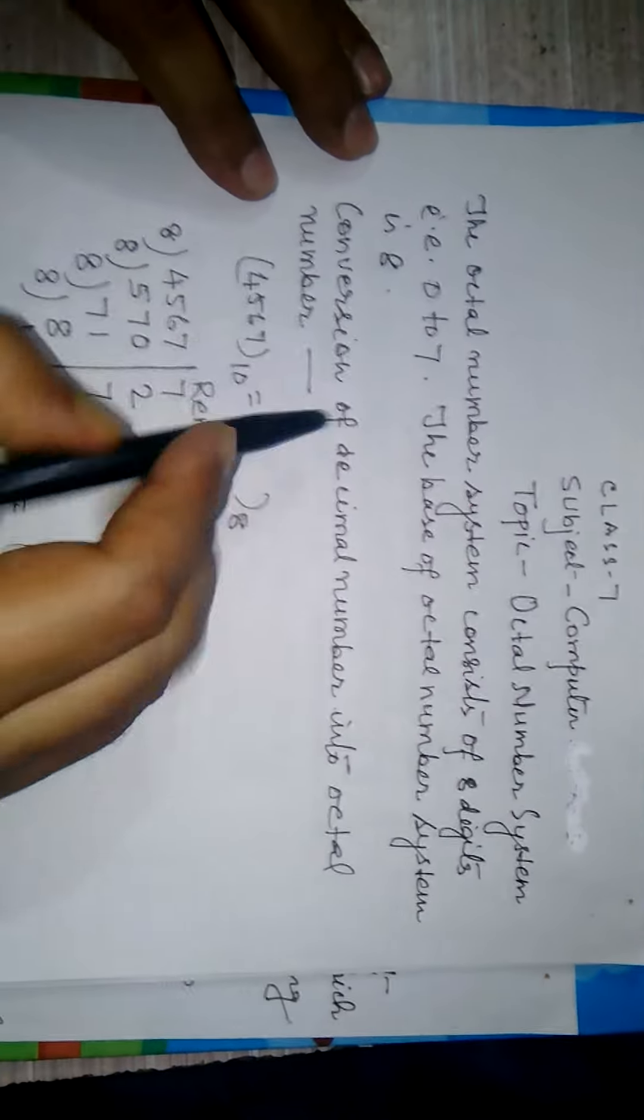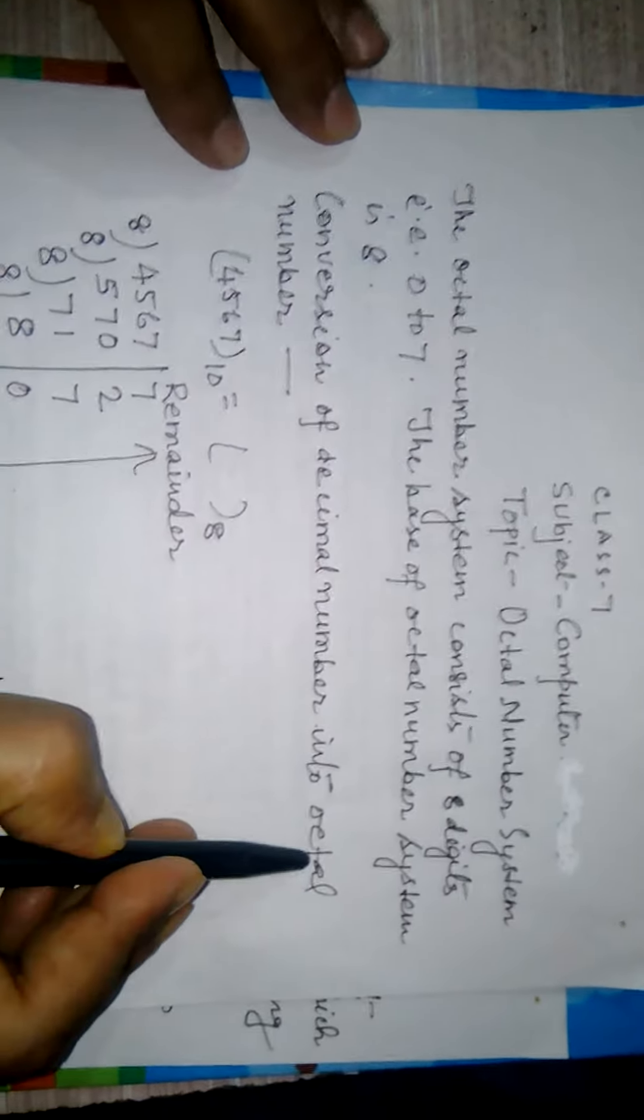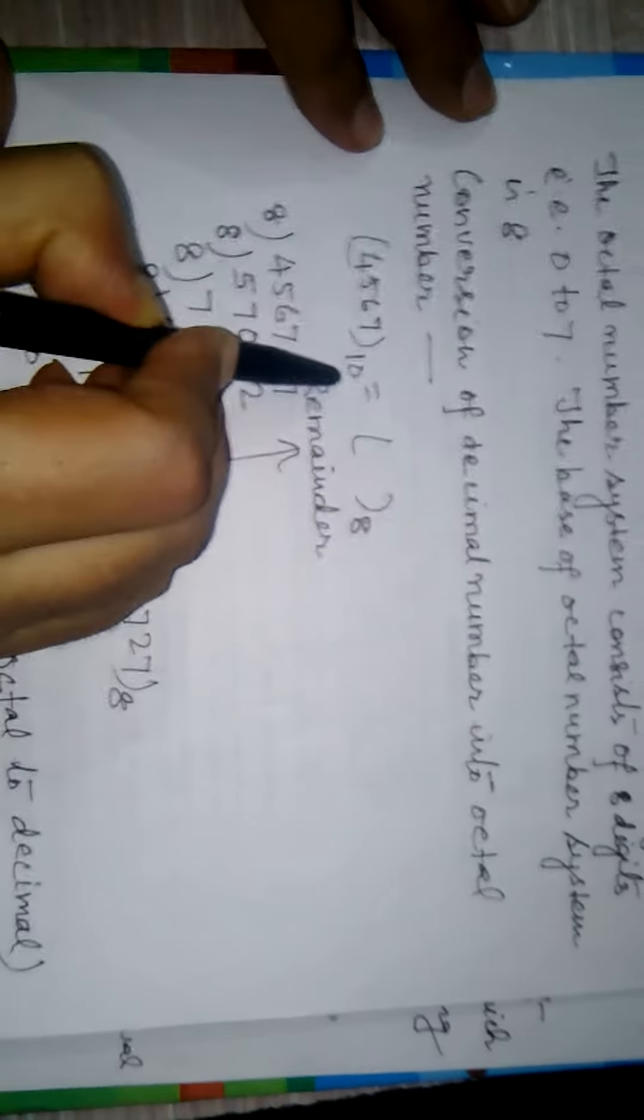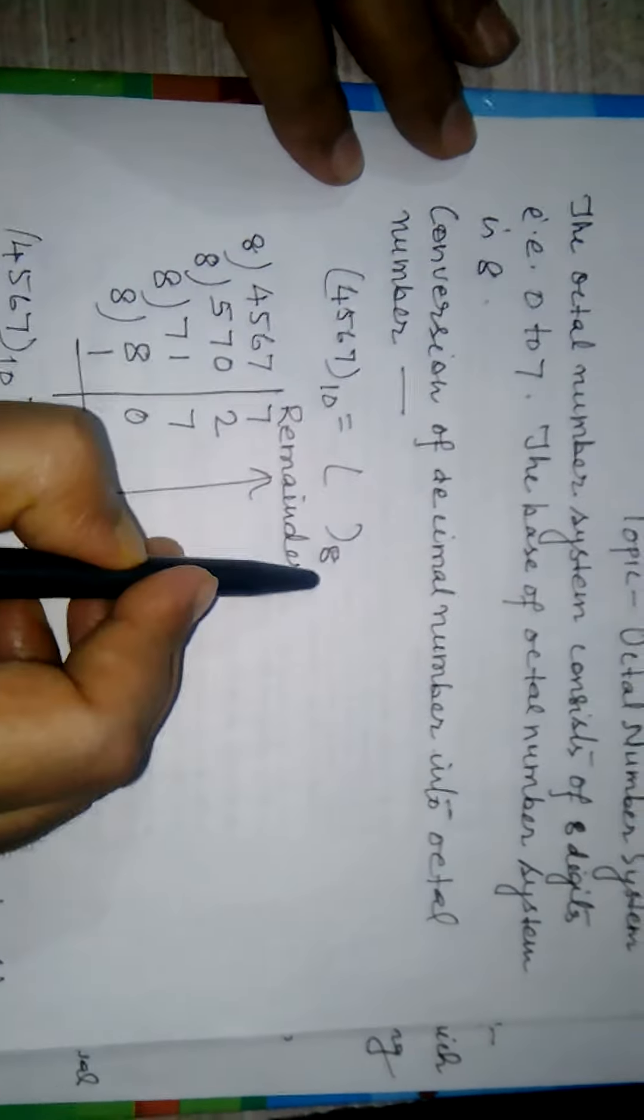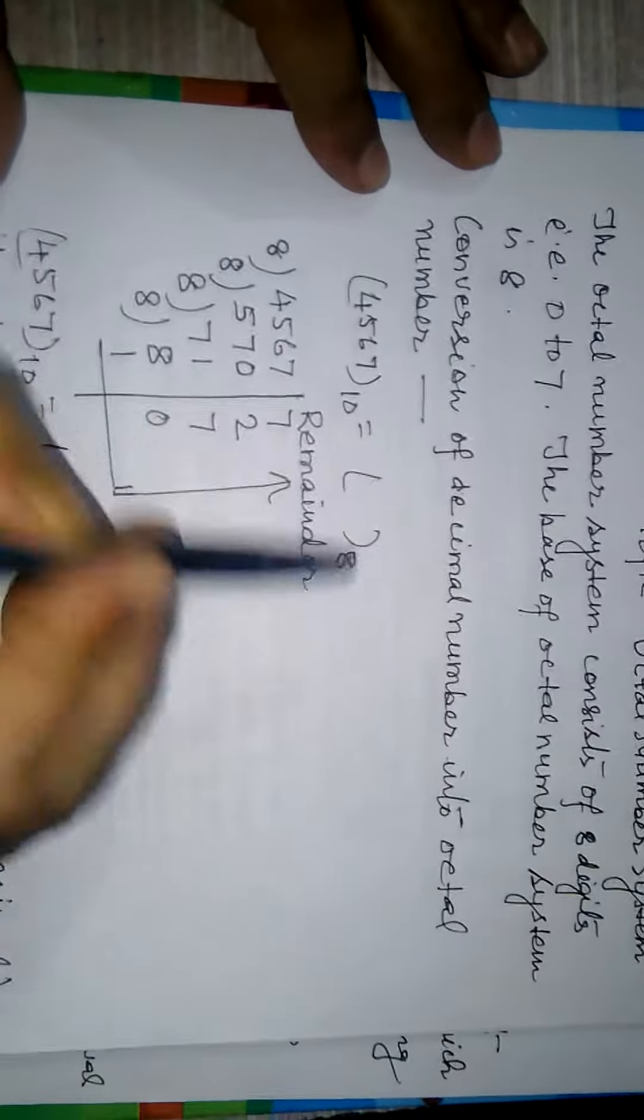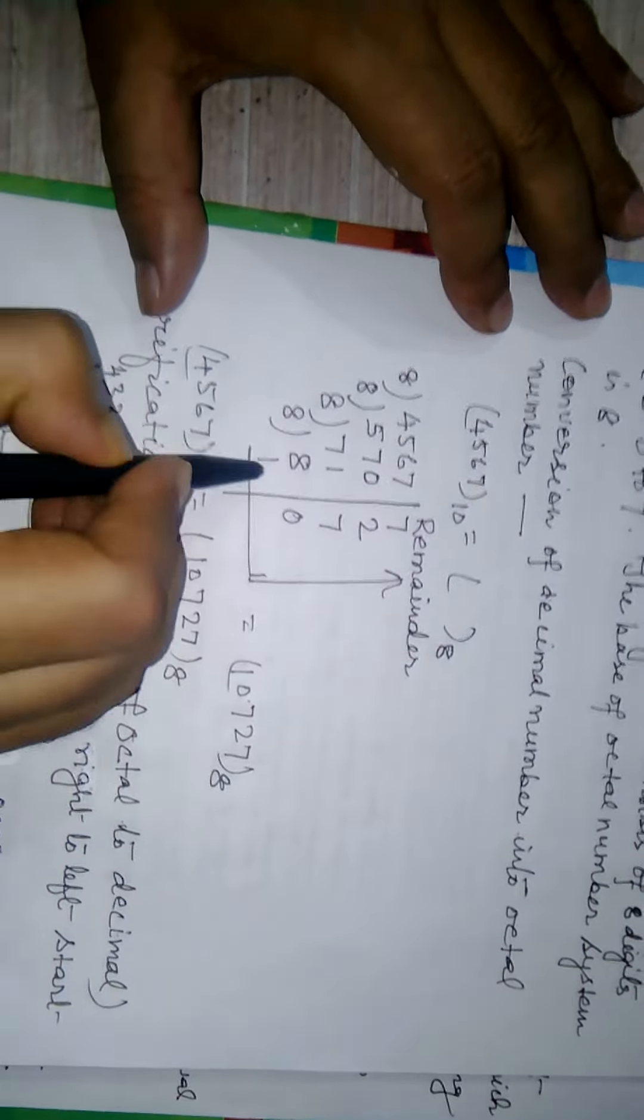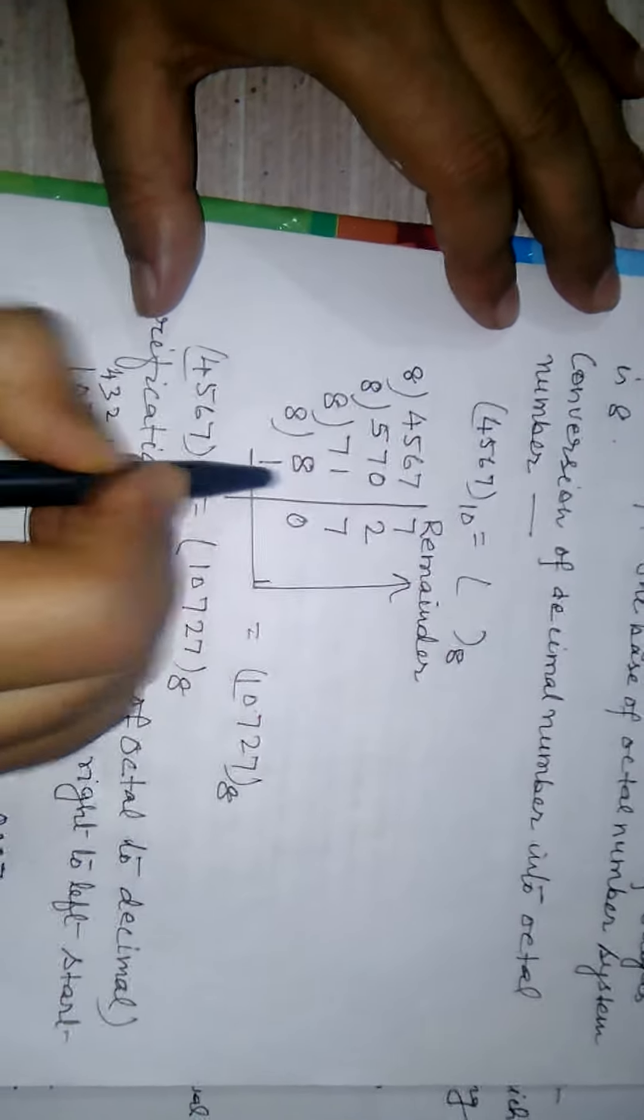We have explained how to convert decimal number into octal number system. We take an example 4567 base 10 and convert it into an octal number. First, we have divided by 8 till we get a quotient less than 8.